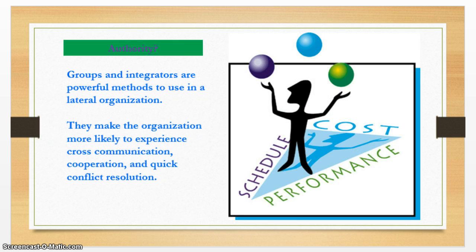The integrator needs a lot of data to be successful. When the integrator can see lots of different parts of the company, he or she will be more effective — Galbraith describes this as cross-company visibility. The integrator's influence is also elevated if he or she has control over a budget or over people in a certain function of the organization.